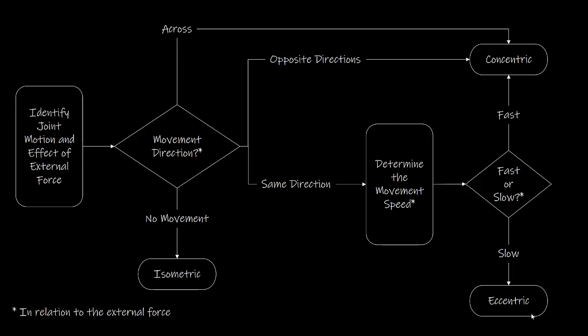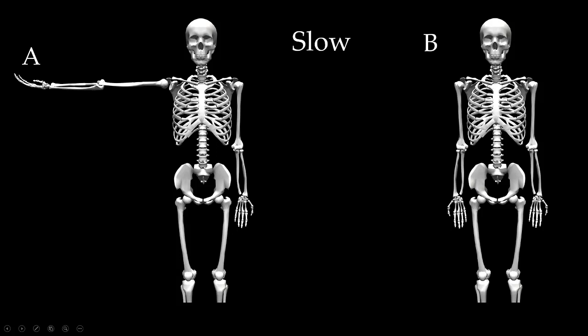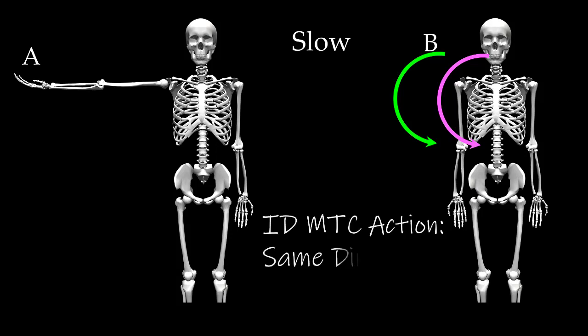Now let's get back to our example. We go from A to B slowly. The joint motion is glenohumeral adduction, going in a clockwise direction. The effect of the external force, gravity, is also to adduct the glenohumeral joint. The movement from A to B is slower than if only gravity were acting alone. Therefore, since the joint motion and the effect of gravity are in the same direction and the movement is slower, we conclude that we have an eccentric MTC action.